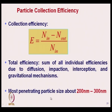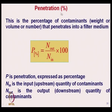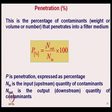The most penetrating particle size is around 200 to 300 nanometers. Penetration percent is the percentage of contaminants — by weight, volume, or number — that penetrates through the filter medium. Penetration percentage is N_out / N_in, which is the ratio of contaminants passing out through the filter medium to N_in.